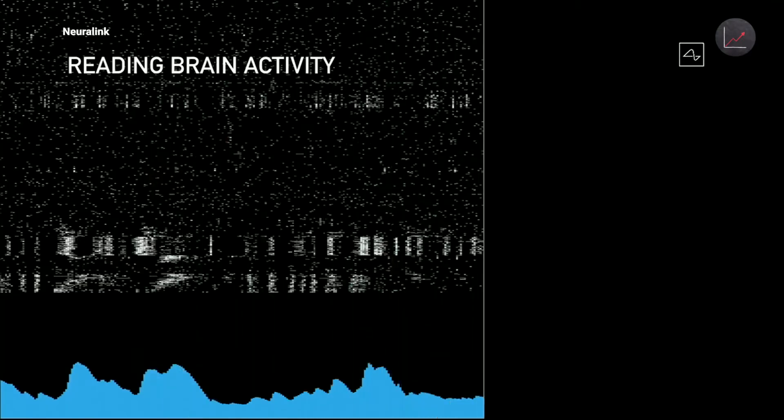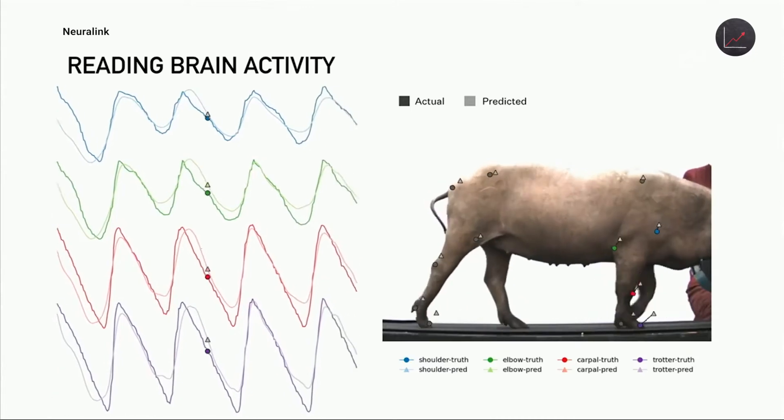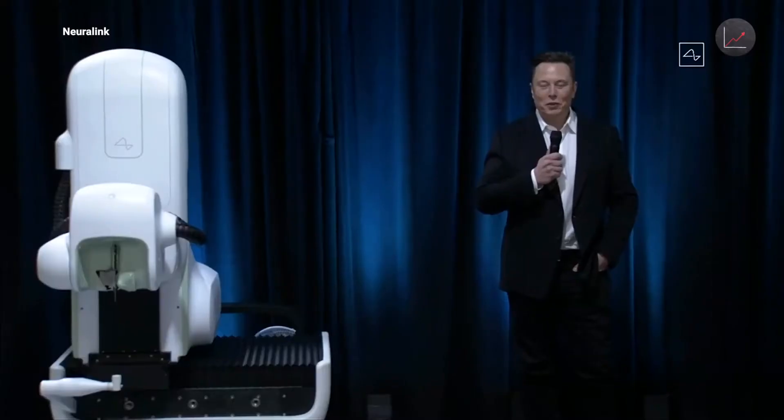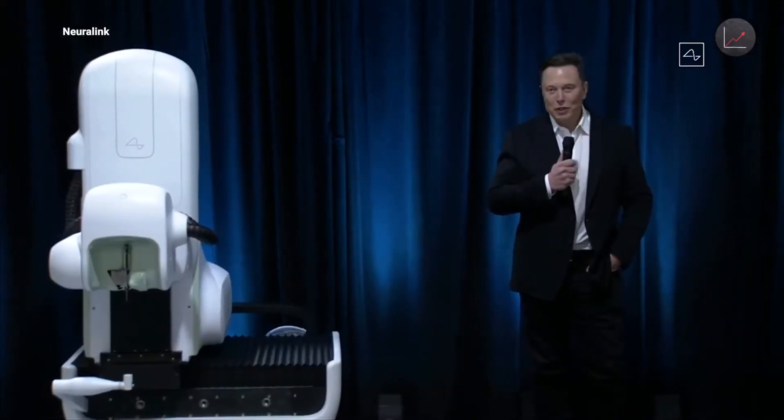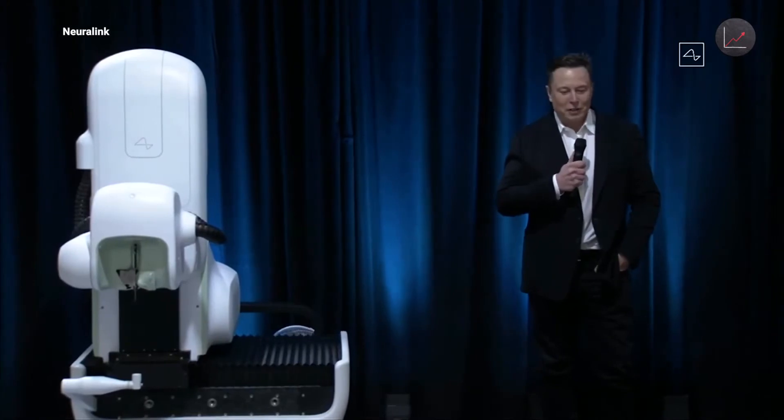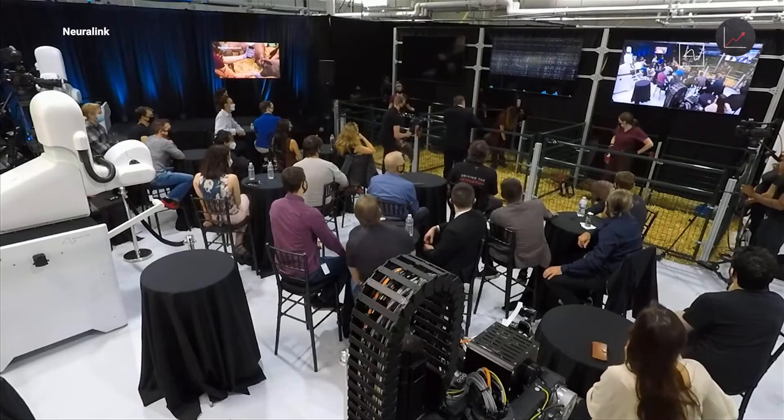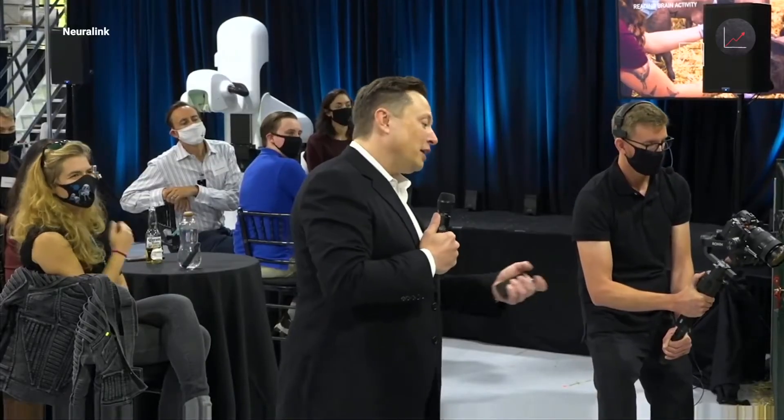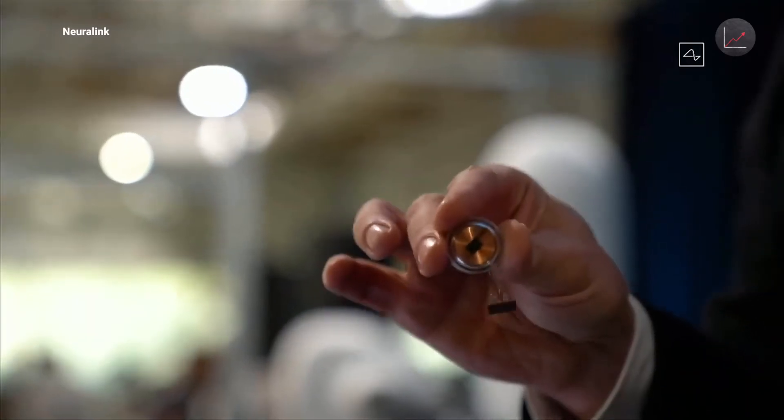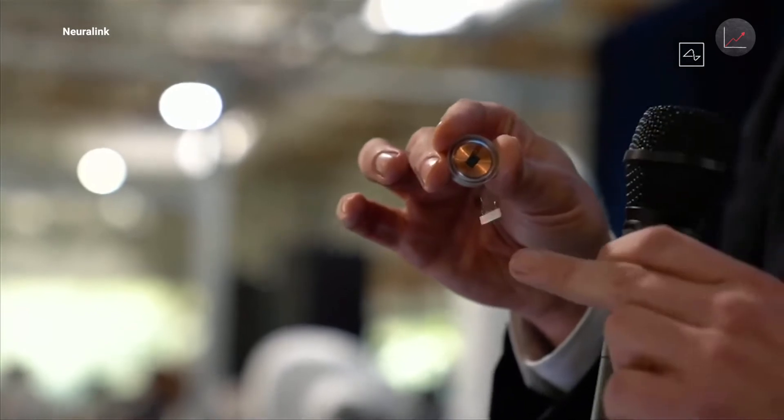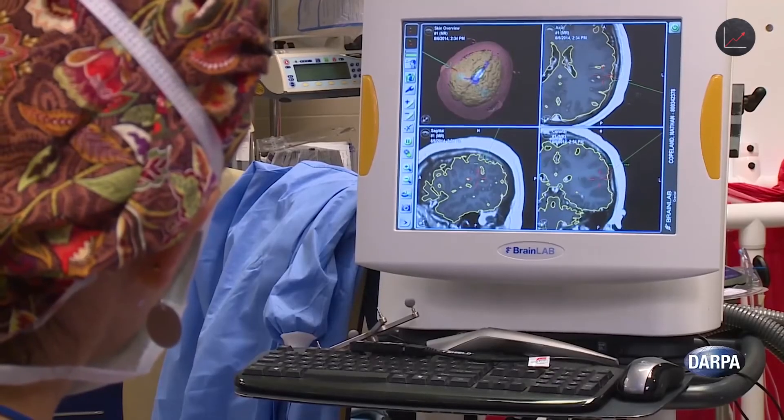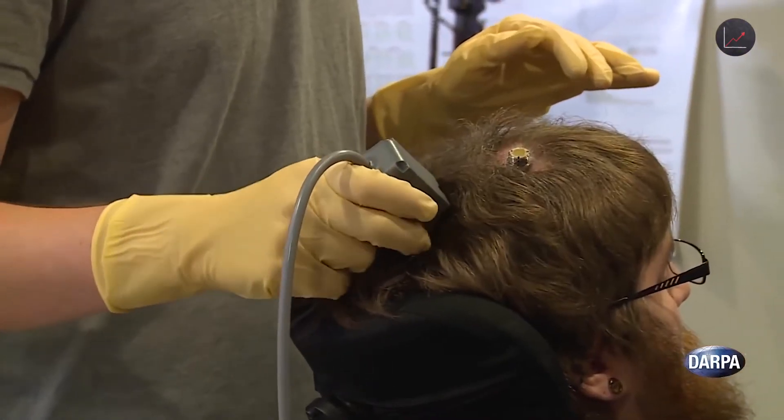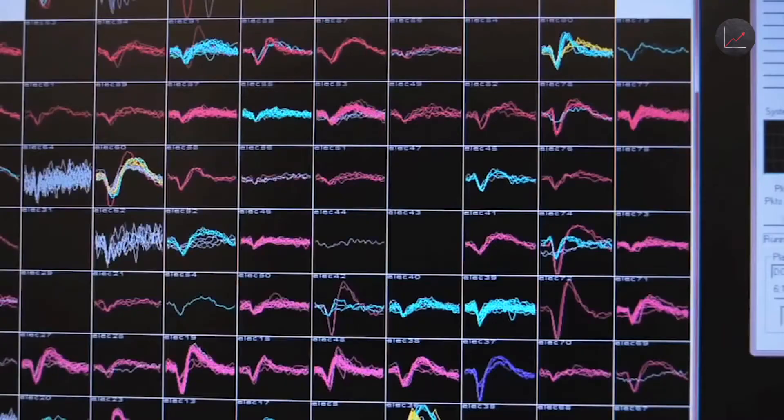If you've heard of one brain-computer interface, it's probably this one. All right, welcome to the Neuralink product demo. I'm really excited to show you what we've got. I think it's going to blow your mind. When Elon speaks, we all listen. That's just life in the 21st century. But Neuralink and its competitors didn't come out of nowhere. They're built on decades of work by neuroscientists attempting to understand and interpret what's going on in the brain.